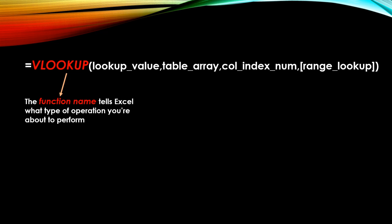The first thing you'll probably notice is the function name, and that tells Excel what type of operation you're about to perform. In this case, VLOOKUP. There are around nearly 500 different functions in Excel, which are designed to accomplish very specific distinct tasks.